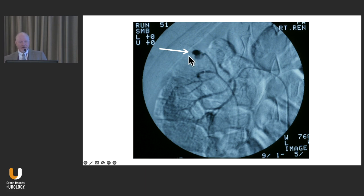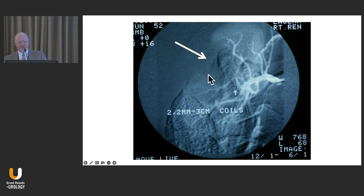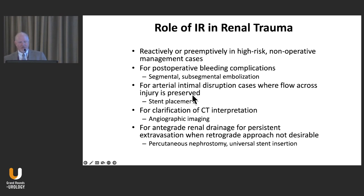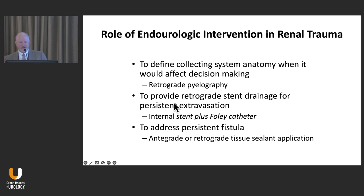He had a fistula pseudoaneurysm that had formed from an arterial branch into the collecting system. They were able to coil a small percentage of the kidney. If I had that case to do over, I would have taken him prospectively to angiography before selecting non-operative management — he could have had a bad outcome if not closely observed. IR can be extremely helpful, sometimes just to clarify a nebulous CT interpretation or to provide antegrade drainage for persistent extravasation. Endourological management — placing a stent for persistent collecting system leaks — is also helpful, with a Foley catheter placed simultaneously to prevent reflux through the injury, typically left in for about a week.